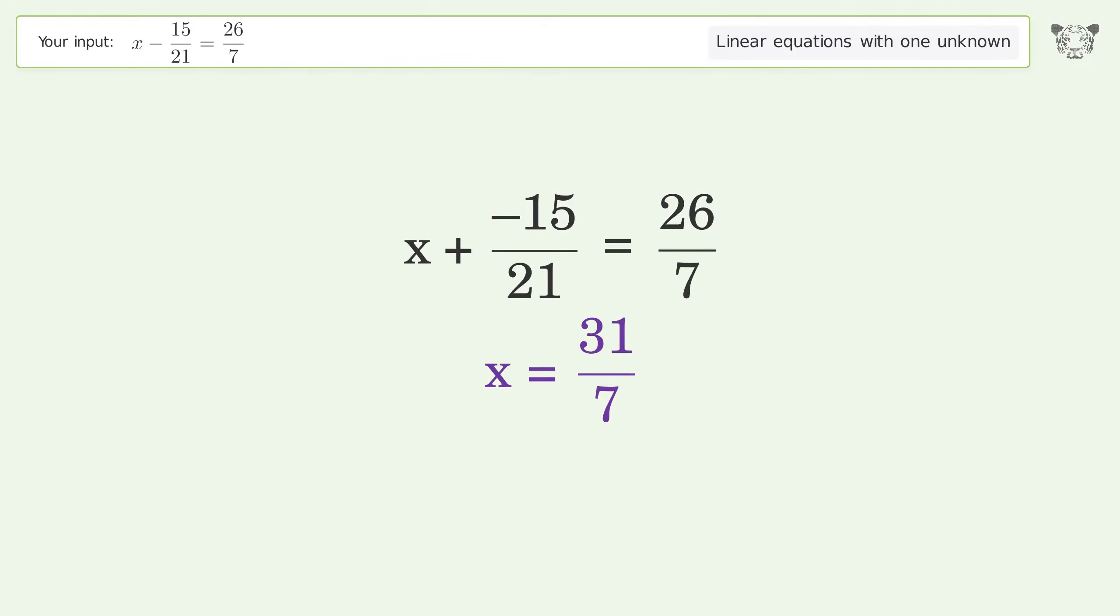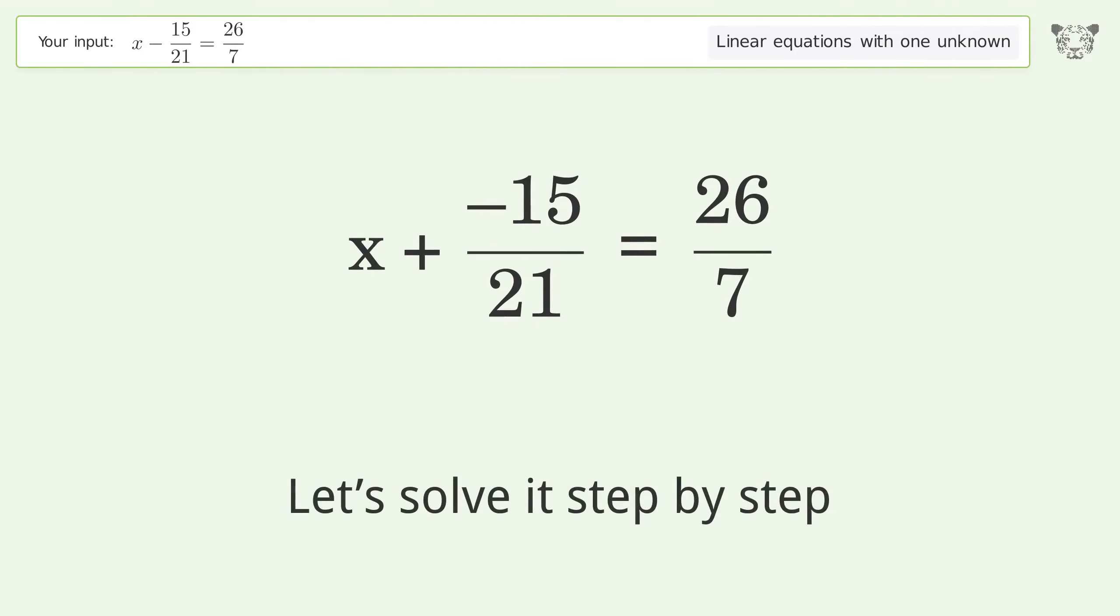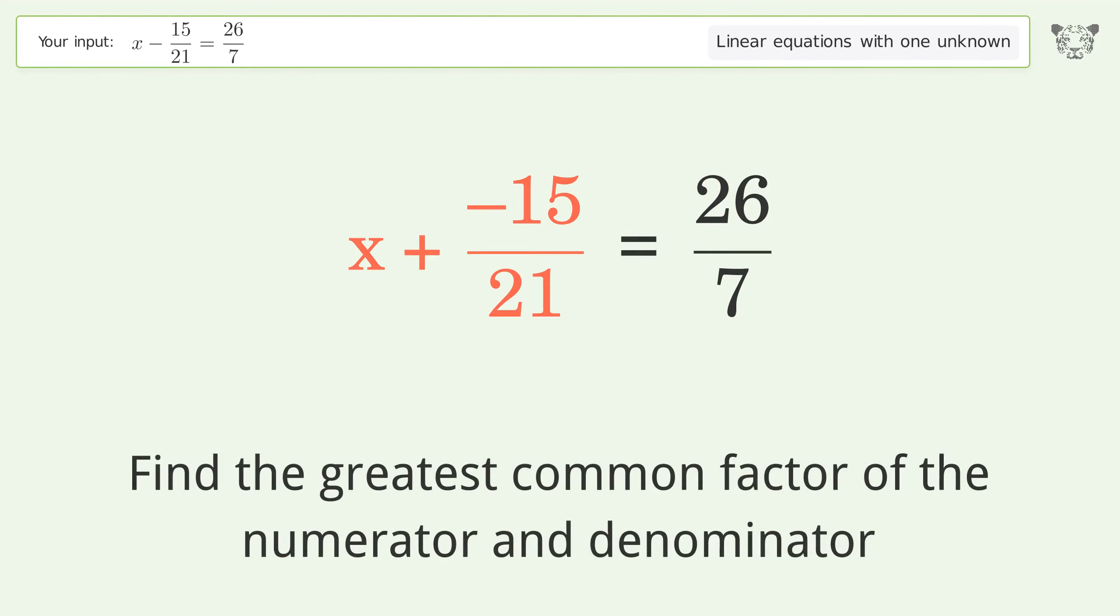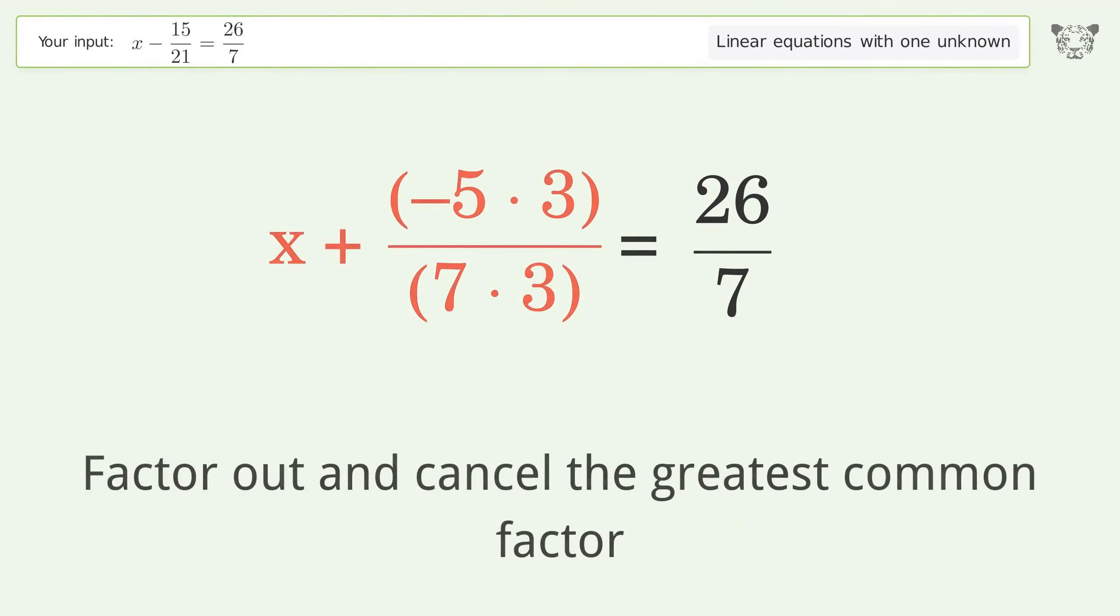Let's solve it step by step. Simplify the expression. Find the greatest common factor of the numerator and denominator. Factor out and cancel the greatest common factor.